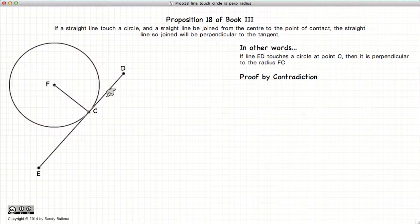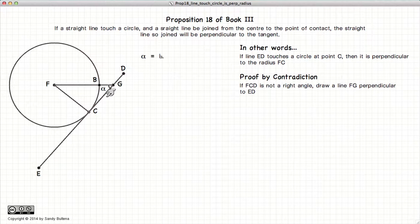So how do we prove this? We're going to do this by contradiction. If FCD is not a right angle triangle, so if FCD is not a right angle...